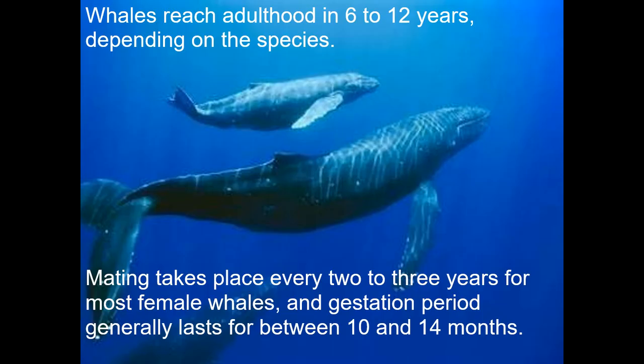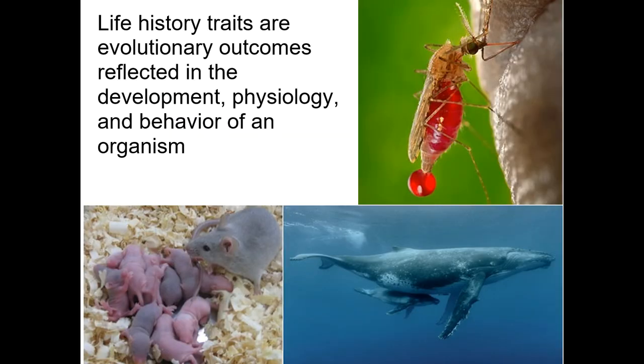The opposite extreme might be a whale. It might take six to twelve years for a whale to grow up depending on the species, and each mom is going to have one baby maybe every two or three years. She puts a whole lot of work into that baby — protecting it from predators and being pregnant for quite a long time. These life history traits really influence gestation time and how much energy is put into caring for the young.